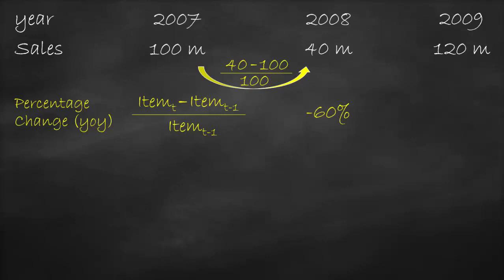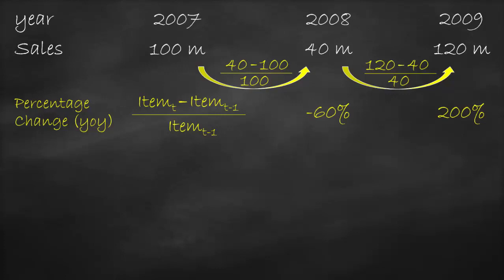The percentage change in 2009 is $120 million minus $40 million, all divided by $40 million, which is equal to 200%. This means that the company has higher sales by around 200% in 2009 compared to the previous year of 2008. However, this percentage does not make sense because it does not explain how a firm doubles its sales in one year without acquiring another firm or expanding. This high percentage is misleading, as it results from comparing high sales of 2009 with the very low sales in 2008 due to the global financial crisis.